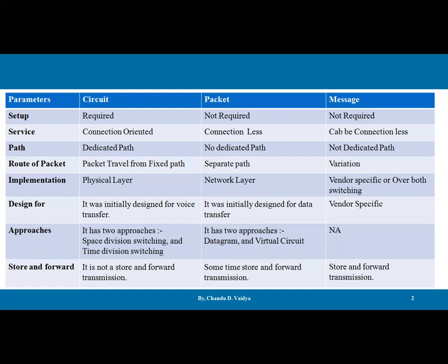Route of packets: packets travel from a fixed path. Whatever the setup path is available in circuit switching, on that path only the packets are going to be transferred. But in packet switching, one can choose any path randomly. In message switching, it is kind of a variation.